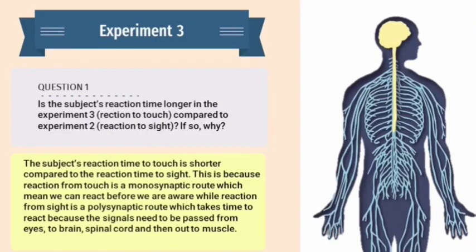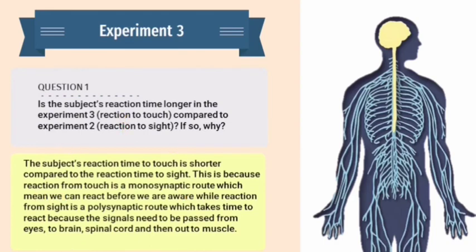The first question for the last experiment: is the subject's reaction time longer for reaction to touch compared to reaction to sight? The answer is that the subject's reaction time to touch is actually shorter compared to the reaction time to sight. This is because reaction from touch is a monosynaptic route, meaning we can react before we are aware, while reaction from sight is a polysynaptic route which takes more time as the signal needs to travel from the eyes to the brain to the spinal cord and then out to the muscles.